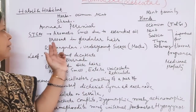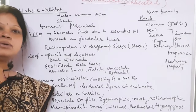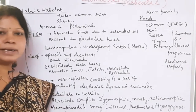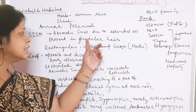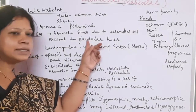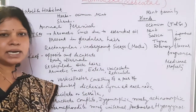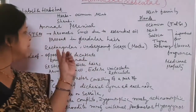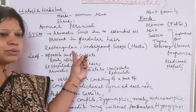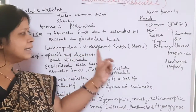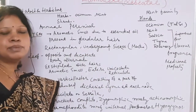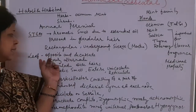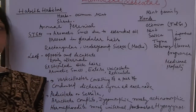The stem has an aromatic smell due to essential oils present in the glandular hairs. The surface of the stem is covered by these hairs, which give the stem and leaves their characteristic flavor. The stems are rectangular in cross-section, and in the case of mentha, there is presence of underground stolons.